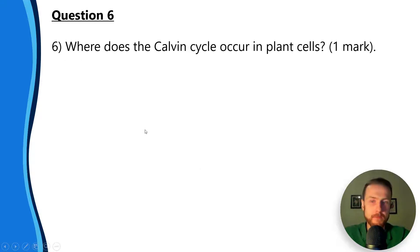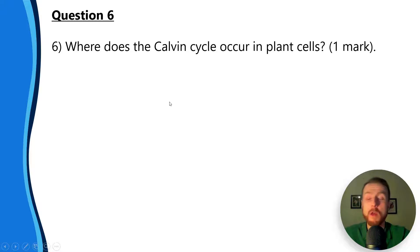Question six: where does the Calvin cycle occur in plant cells? That will be in the stroma. Top tip: do not say stoma. Very similar words - a little spelling mistake can cost you though. Stoma is the plural of stomata. Make sure you say stroma. Normally spelling won't impact you too much in biology as long as it's phonetically correct, but in this case they're two totally different things.